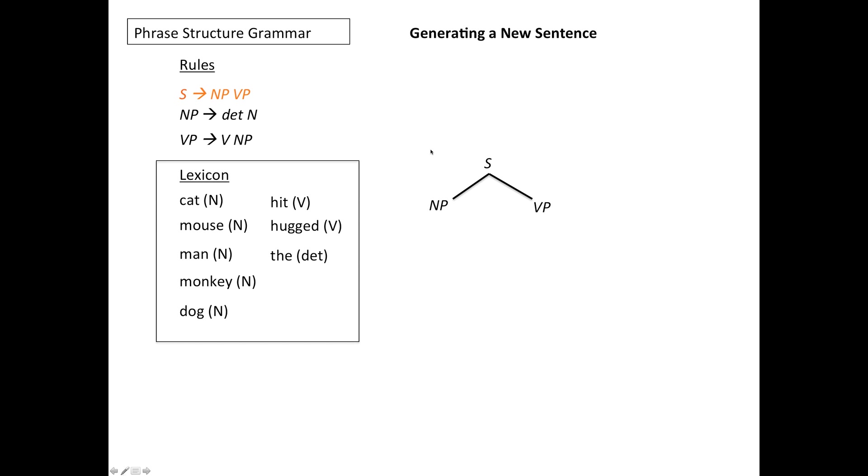The first thing I do is I start with this rule labeled with S on the left. That means sentence. And what this says is that a sentence has two constituents, NP and VP for noun phrase and verb phrase.